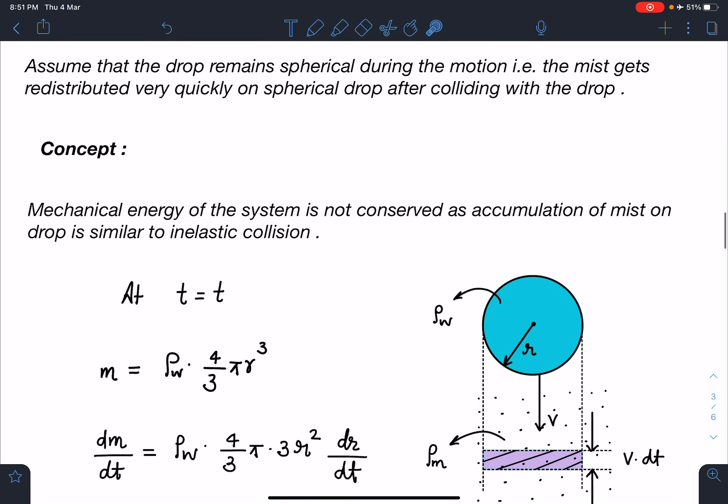Concept wise, you can understand very easily. Mechanical energy of the system is not conserved as accumulation of mist on the drop is similar to inelastic collision, perfectly inelastic collision where two bodies will stick to each other.